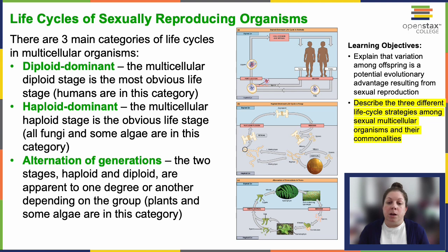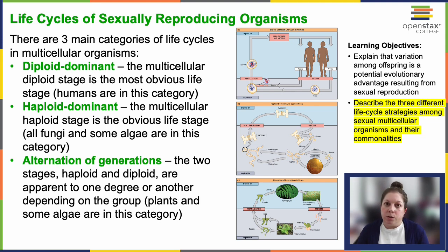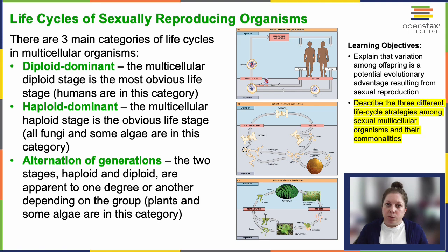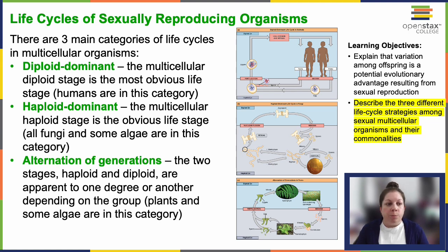Second, haploid dominant: this life cycle emphasizes the multicellular haploid stage with no conspicuous multicellular diploid stage. This pattern is observed in fungi and some algae — it's not particularly common. And then we have alternation of generations, where both haploid and diploid stages are evident to varying degrees depending on the organism. Plants and some algae use this strategy, and plants do some really interesting things, as we're going to see.